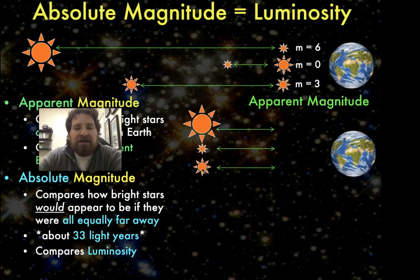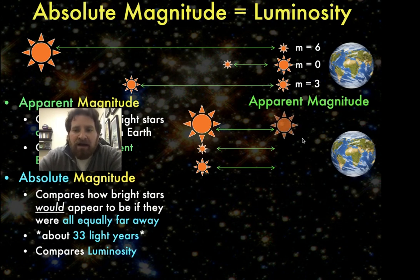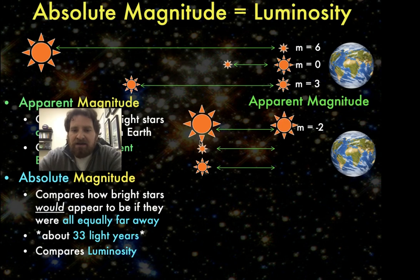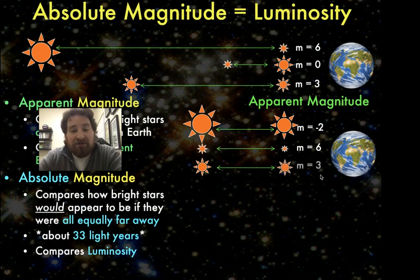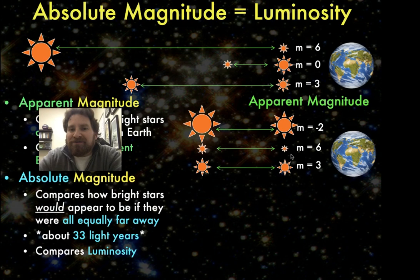If I put these stars 33 light years away — 10 parsecs — they would have a new apparent magnitude. The very high luminosity star would now have a magnitude of minus 2, which means it's very bright. The low luminosity star would have a magnitude much larger than minus 2 — indeed, it would be magnitude 6. The medium luminosity star would have a medium magnitude, and indeed it still has a magnitude of 3. Now those magnitudes accurately reflect their luminosities in comparison to each other. That is what we mean by absolute magnitude.